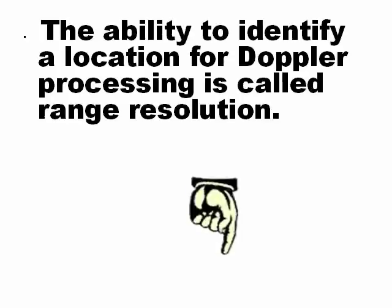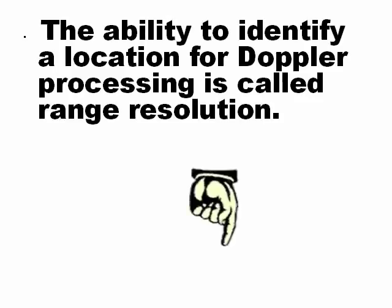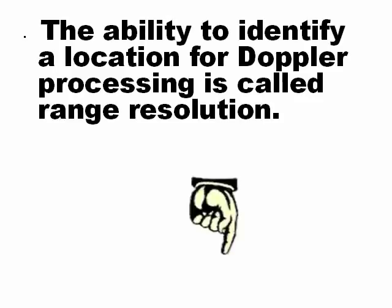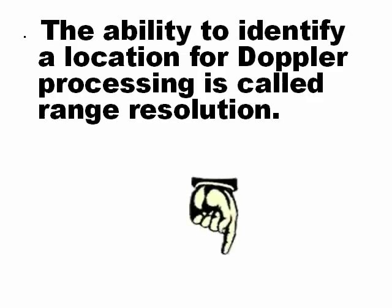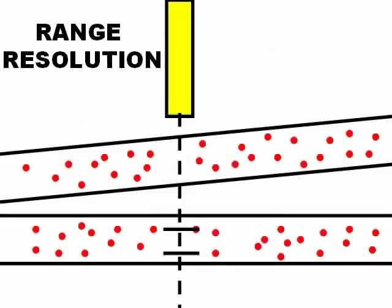Remember: for continuous Doppler it is Range Ambiguity; for Pulsed Doppler it is Range Resolution — you know where you are measuring. You may have two arteries, but with Range Resolution you know that you are measuring only one specific artery.